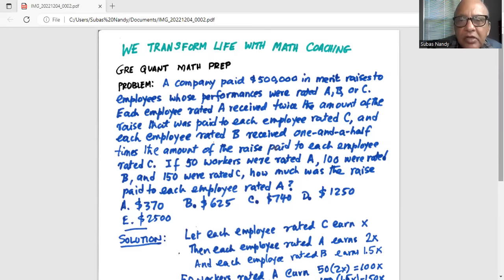A company paid $500,000 in merit raises to employees whose performances were rated A, B, or C. Each employee rated A received twice the amount of the raise that was paid to each employee rated C.